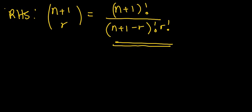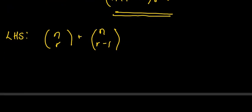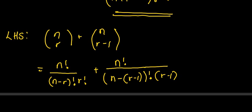On the left hand side we have n choose r plus n choose r minus 1. We are supposed to combine these two to obtain the right hand side. So this becomes: n factorial over n minus r factorial times r factorial, plus n factorial over n minus r minus 1 factorial times r minus 1 factorial.